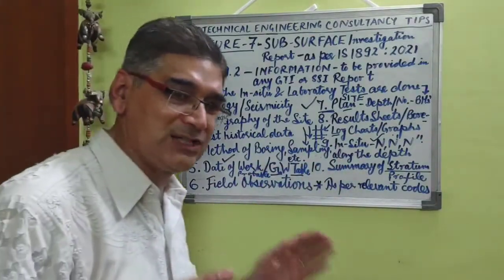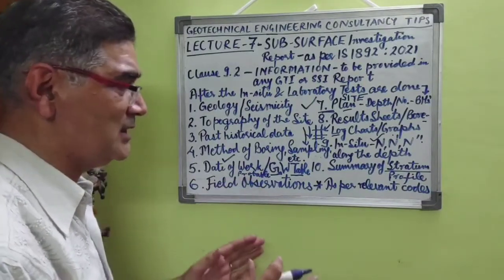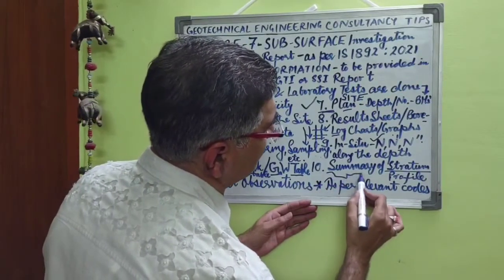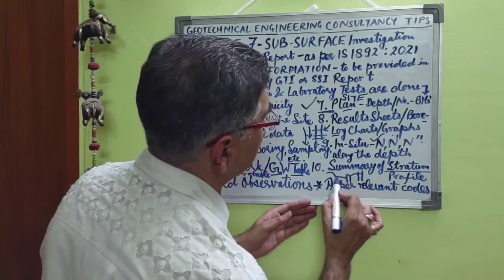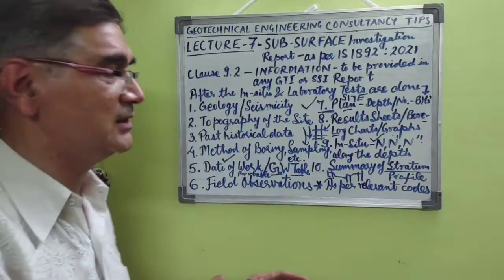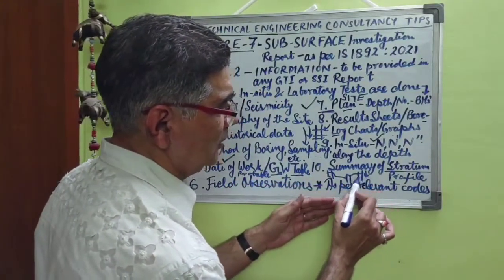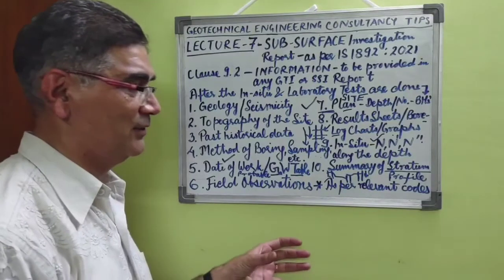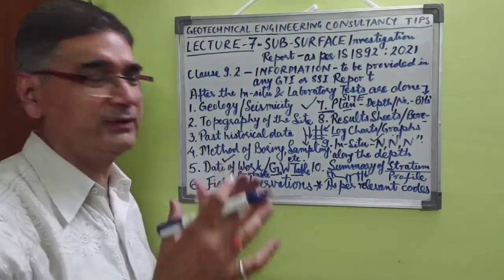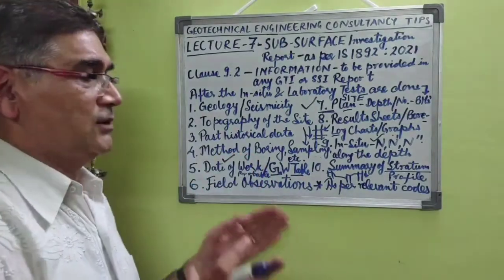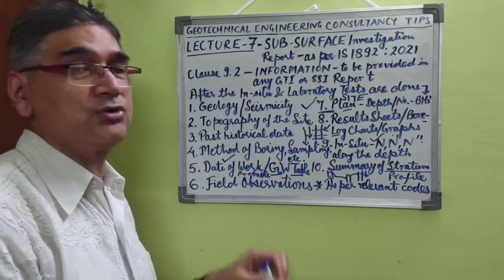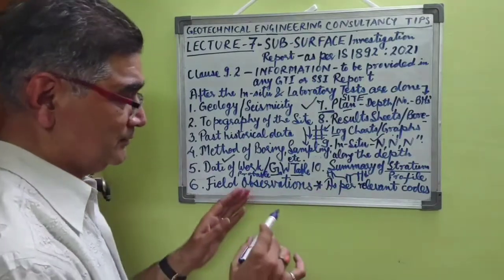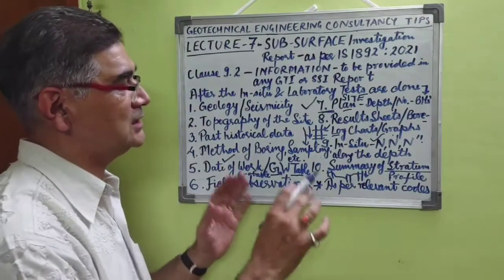The last point is the summary of the strata profile. This means we must depict a comparative profile of all the boreholes explored at the site, referenced to their relative levels, along with the groundwater table encountered. It should be a combined cumulative profile of all boreholes, depicted in the form of a joint profile showing the strata vertically along the depth.